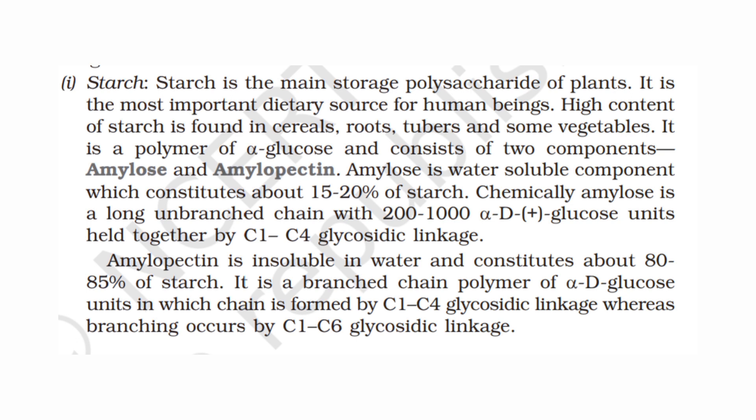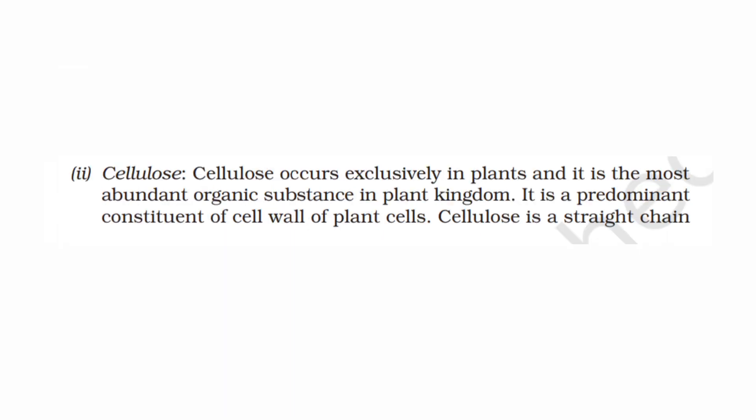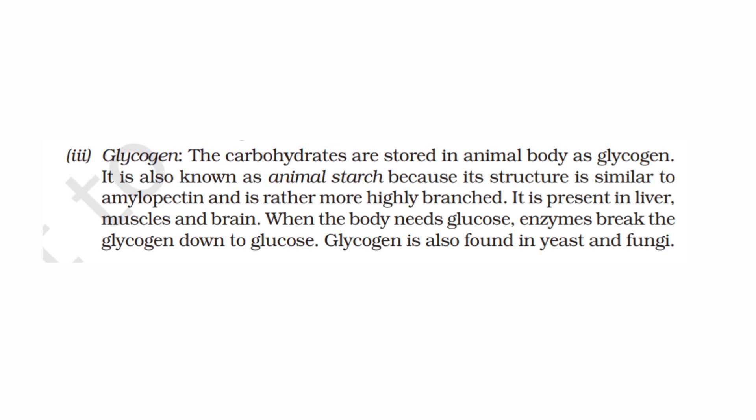Polysaccharides include starch, which is the main storage polysaccharide of plants. Starch has two components: amylose and amylopectin, both with glucose as the monomer. Glycogen is the carbohydrate storage form in the animal body, also called animal starch. Its monomer is also glucose.